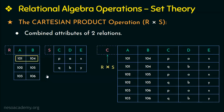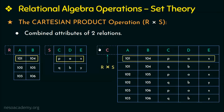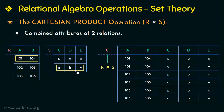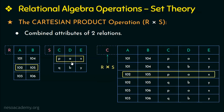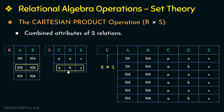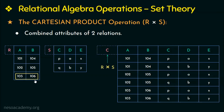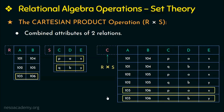If I take relation R with attributes A and B, and relation S with attributes C, D and E, the result of R cross S is computed as follows. The first tuple from R pairs up with the first tuple from S, giving the first tuple in the result. The same first tuple from R then pairs with the second tuple from S, giving the second result tuple. The second tuple from R similarly pairs with all tuples from S, giving the third and fourth result tuples. The last tuple from R pairs with all tuples from S, resulting in two more tuples.